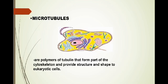Next is the microtubules. Microtubules are polymers of tubulin that form part of the cytoskeleton and provide structure and shape to the eukaryotic cell.